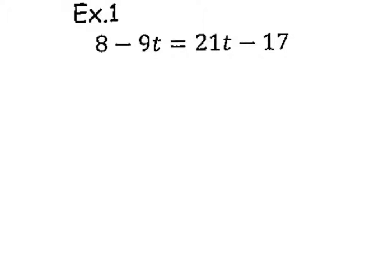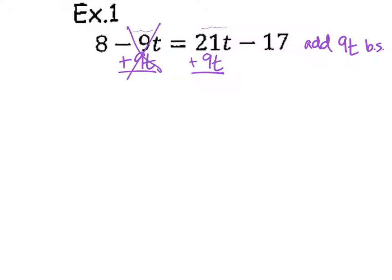Here are my choices. I've got a negative 9 and I've got a 21. Which one is smaller? Negative 9. Move that over. It is negative, so bring the T with it. Make sure your T looks like a T, not a plus sign — you can even do capital T. So I added 9T to both sides. On the left, it cancels and I just have an 8 all by itself on the left. What's 21 plus 9? 30T. Put your equal sign in the middle.